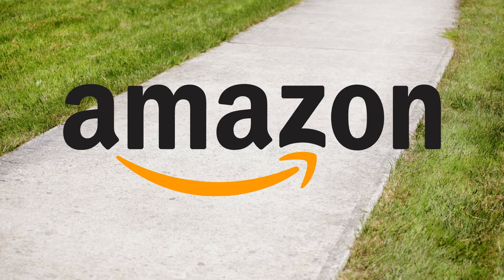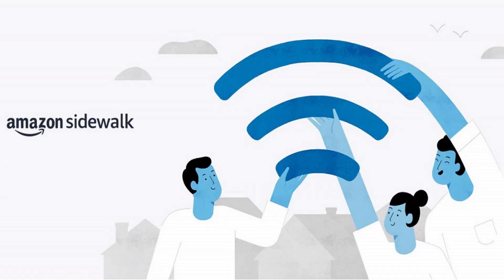The Amazon Sidewalk network went live in mid-2021 and creates a shared network between all Sidewalk-enabled devices. The purpose of Amazon Sidewalk is to extend limited network connectivity between devices so that in the event the primary Wi-Fi network for your Echo or Ring device isn't available, that device can draw a small amount of bandwidth from your neighbor's device to provide basic functions until the primary network connection is restored.